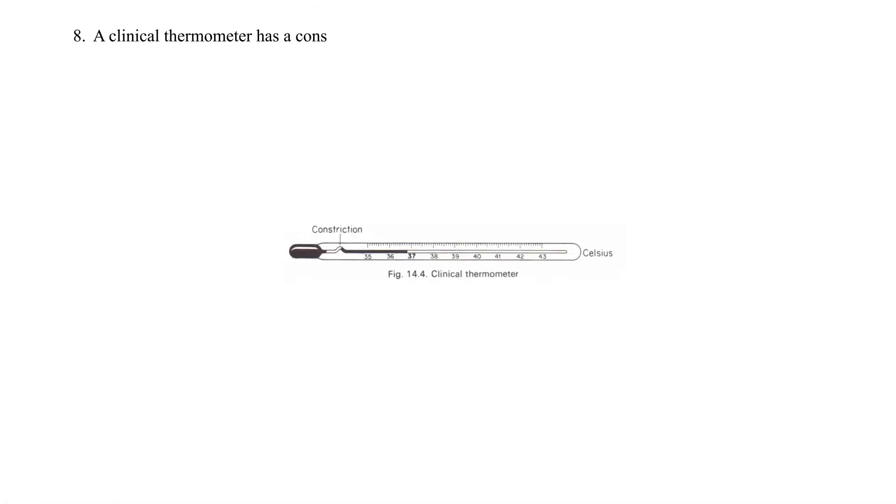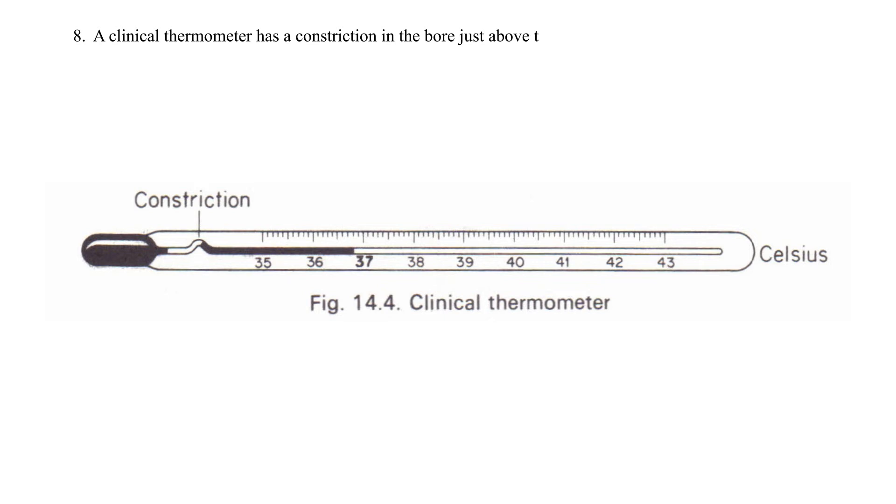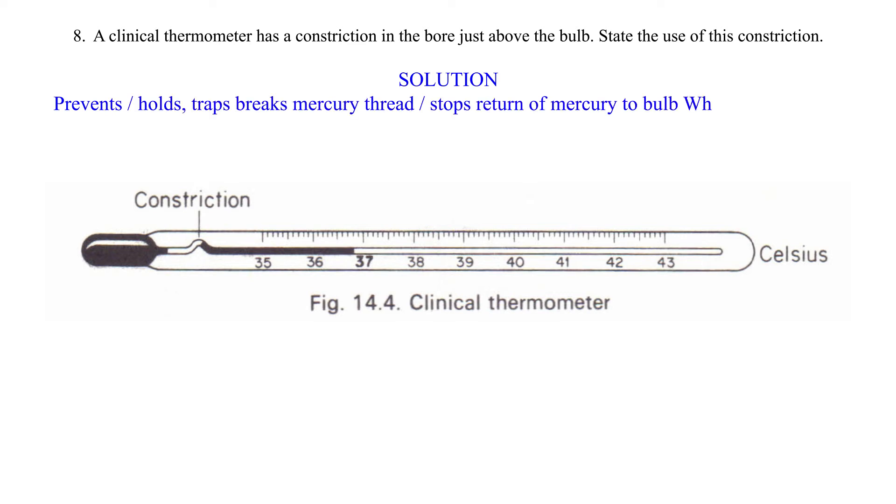Question 8: A clinical thermometer has a constriction in the bore just above the bulb. State the use of this constriction. Solution: Prevents, holds, traps, or breaks mercury thread; stops return of mercury to bulb when thermometer is removed from a body or the surrounding.